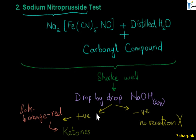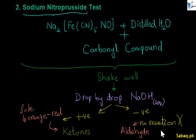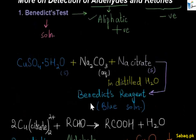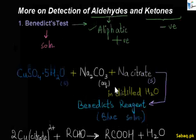So if you have a solution containing a carbon compound and the sodium nitroprusside test is positive, that means the carbon compound is a ketone. We can use this test to differentiate or distinguish between ketones and aldehydes. Today we have discussed two tests to detect aldehydes and ketones: the Benedict solution test and the sodium nitroprusside test.